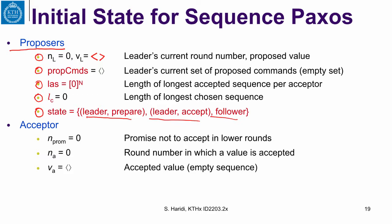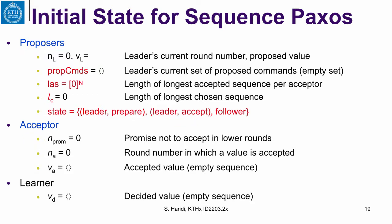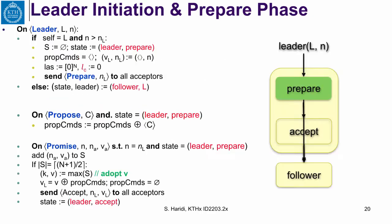The acceptors are as before: the promise, the current round number, and the accepted value, initially empty. And then we have the learner, which holds the decided sequence, initially empty.